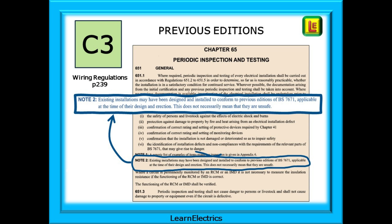A very common question is: what about plastic consumer units? The regulations now state that consumer units should be constructed from non-combustible materials, which means metal to most of us. If the property has a plastic consumer unit that was installed to a previous edition of the regs when plastic was acceptable, and it is still working as intended, then there is no requirement to change it to a metal one. We will record a C3 and suggest to the customer that metal consumer units offer better fire safety, and leave it at that. If the client says no, then that is fine — your obligation is to tell them, and that is now complete.